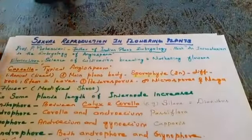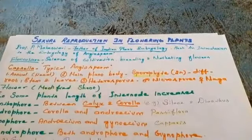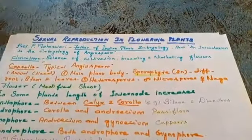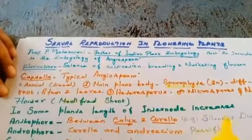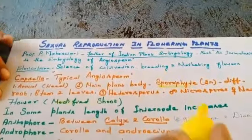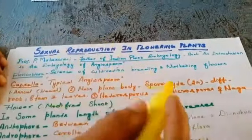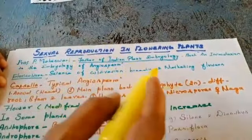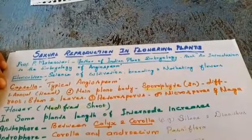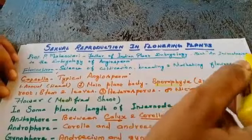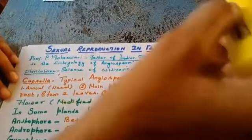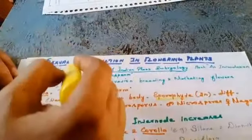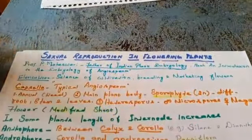Today let us see sexual reproduction in flowering plants. Who is the father of Indian plant embryology? Professor P. Maheshwari is known as the father of Indian plant embryology. He wrote a book — the name of the book is 'An Introduction to the Embryology of Angiosperms.'